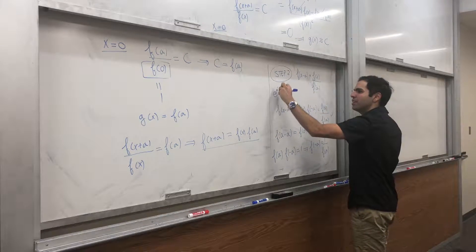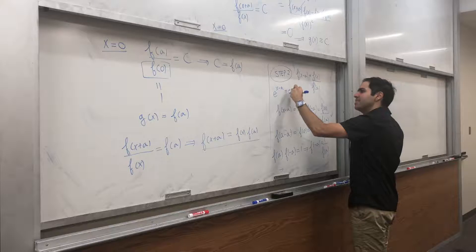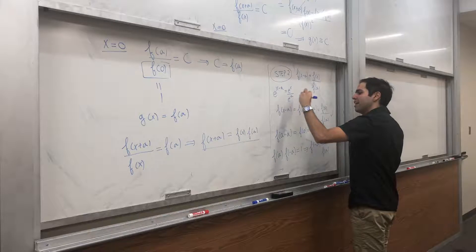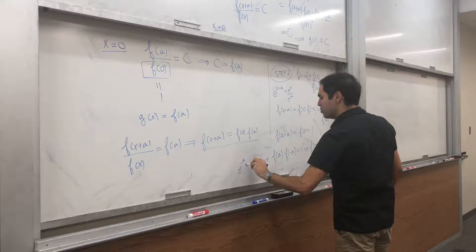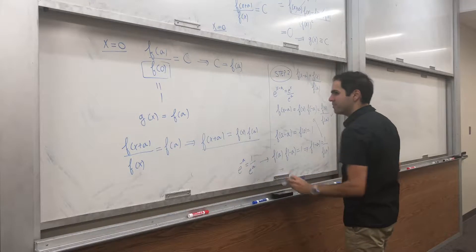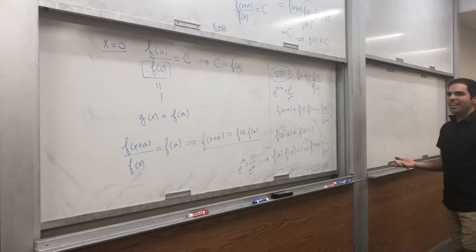So, you have shown that if you want e to the x minus a, it's e to the x over e to the a. And this just means e to the minus a equals to one over e to the a. That's good.